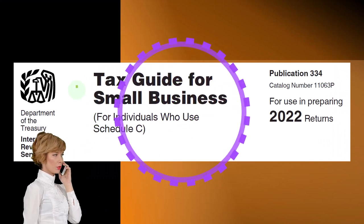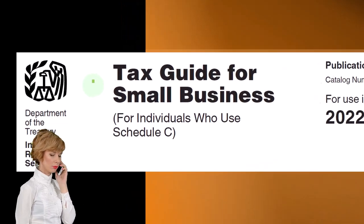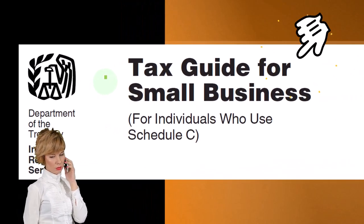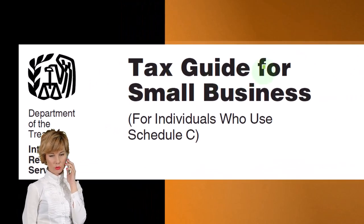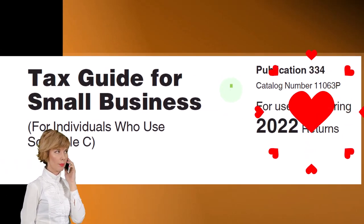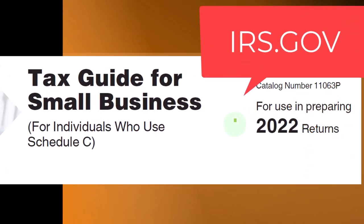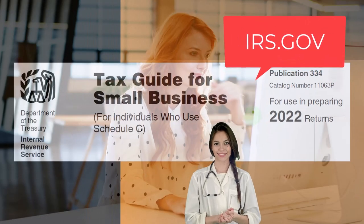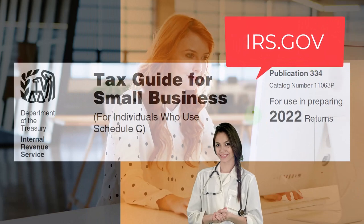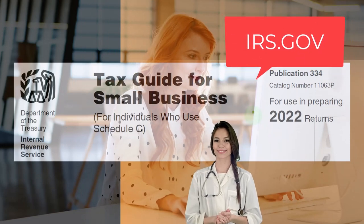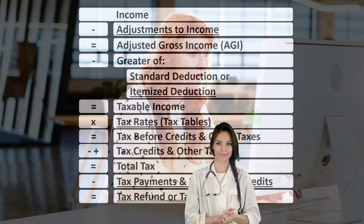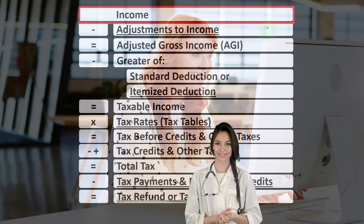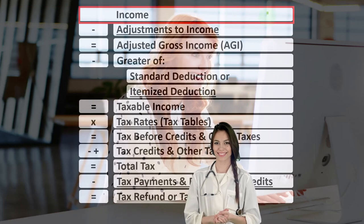Most of this information comes from the Tax Guide for Small Business for individuals who use Schedule C — Publication 334, tax year 2022. You can find it on the IRS website, irs.gov. Looking at the income tax formula, we're focused on line one: income.